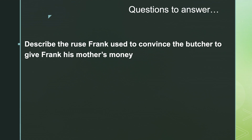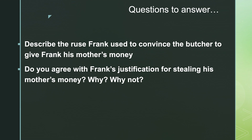Some questions for you to consider. Describe the ruse that Frank used to convince the butcher to give Frank his mother's money — what are the things that he did to make it very convincing? And Frank basically told Alice that he deserves his mother's money. Do you agree? Remember, anytime a question begins with 'do you agree,' we're asking for your opinion — it's a critical thinking question. So do you agree that Frank was justified for stealing his mother's money? If you agree, why? If you don't agree, why not?